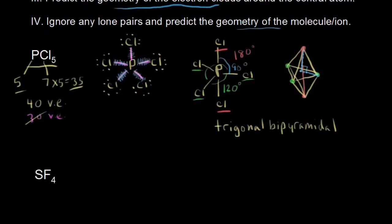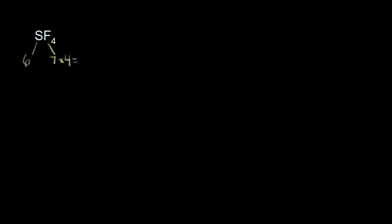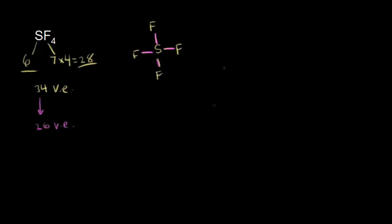We're going to start by drawing the dot structure and counting our valence electrons. Sulfur is in group 6, so 6 valence electrons. Fluorine is in group 7, so 7 valence electrons, and I have 4 of them. 7 times 4 is 28, plus 6 is 34 valence electrons total. Sulfur goes in the center because fluorine is much more electronegative, bonded to 4 fluorines. So far we've shown 2, 4, 6, and 8 electrons — 34 minus 8 gives us 26 valence electrons still to account for.